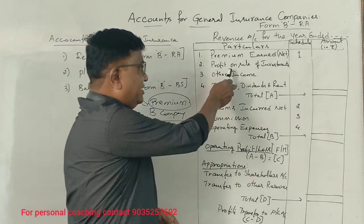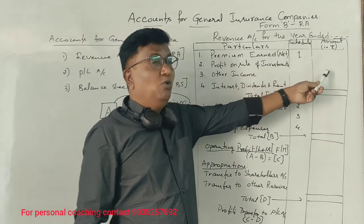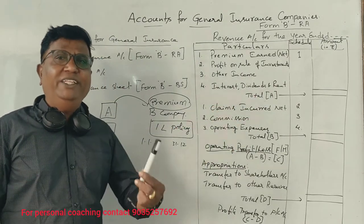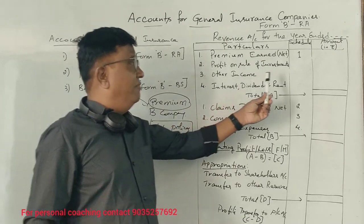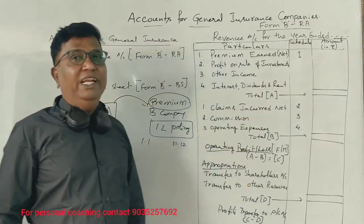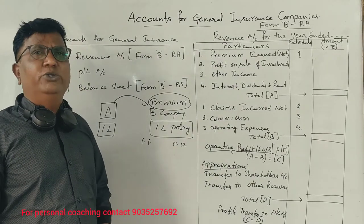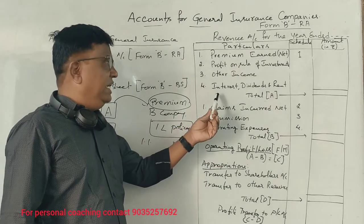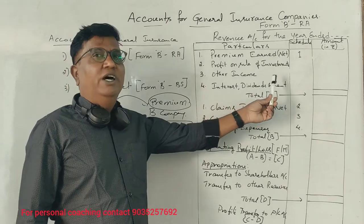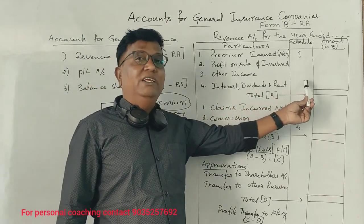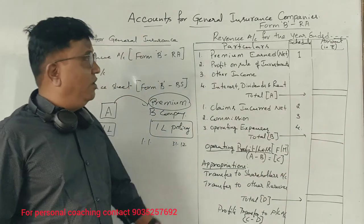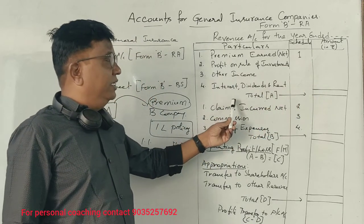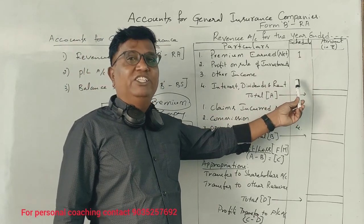Other income includes: profit on sale of investment, and other income such as real estate income. We will have to specify another income. We will have to make a commission received, interest received, dividends, rent received — we will have to make other income. We will have to make a premium earned net amount. So we will have to make a total income for a general insurance company.